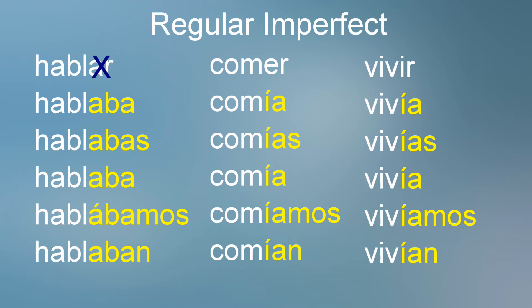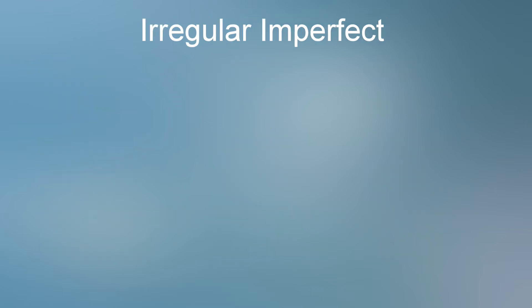Here are verbs using the regular endings: hablar, comer, and vivir. By the way, the accents are important — don't forget to learn them too. As stated earlier, there are only three irregular verbs to learn in the imperfect tense.